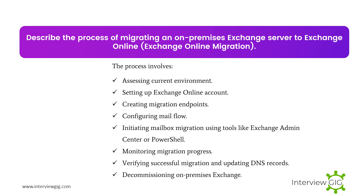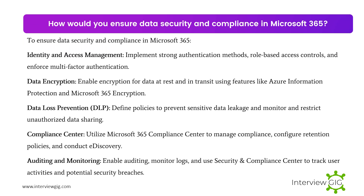Describe the process of migrating an on-premises Exchange Server to Exchange Online. The Exchange Online migration process involves: assessing the current environment, setting up an Exchange Online account, creating migration endpoints, configuring mail flow, initiating mailbox migration using tools like Exchange Admin Center or PowerShell, monitoring migration progress, verifying successful migration, updating DNS records, and decommissioning the on-premises Exchange server.